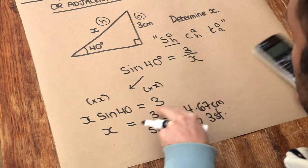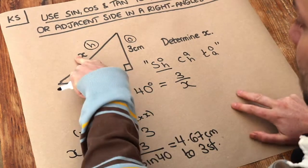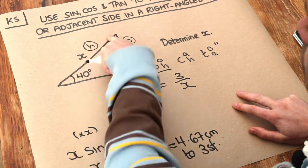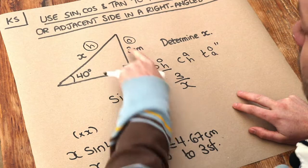Always check that your answer looks sensible. Can you see that length of 4.67 is a bit longer than 3, and we expect the hypotenuse to be longer than either the opposite or the adjacent.